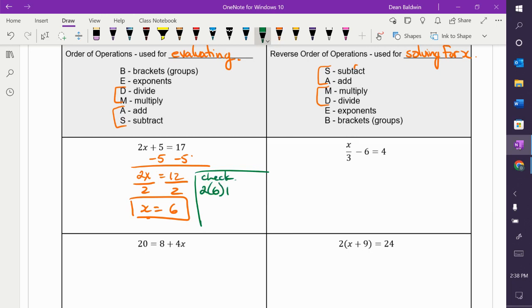2, you put the 6 in for X. And then, because we're evaluating it, we follow BEDMAS. BEDMAS says you do brackets and exponents. There's no brackets or exponents. But there is multiplication. So, 2 times 6 is 12 plus the 5. 12 and 5 is? 17. 17. So, you get 17 is equal to 17. So, you know you did it right.